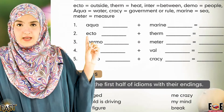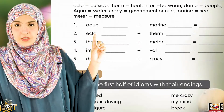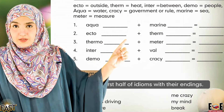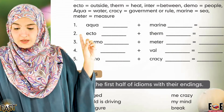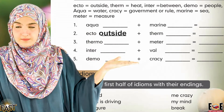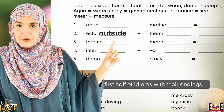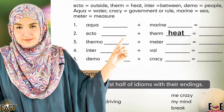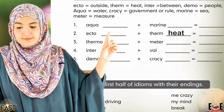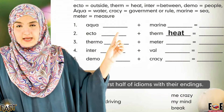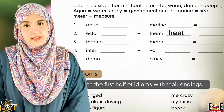Next: ecto + term equals blank. 'Ecto' means outside, and 'term' means heat. So the answer is outside heat.